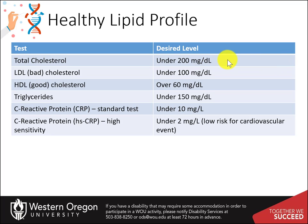A healthy lipid profile is one where total cholesterol levels are under 200 mg per deciliter of blood plasma. LDL should optimally be below 100 mg per deciliter and HDL above 60 mg per deciliter. Total triacylglycerides should be under 150 mg per deciliter. Although it is not a lipid, C-reactive protein is gaining more attention as another marker of cardiovascular health. In the high-sensitivity test for this protein, optimal levels should be under 2 mg per liter, or 0.2 mg per deciliter.